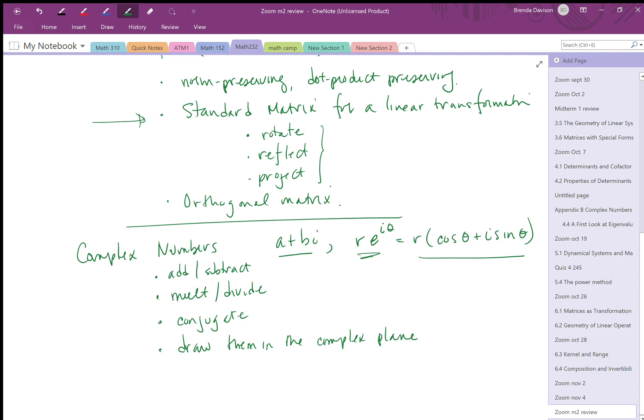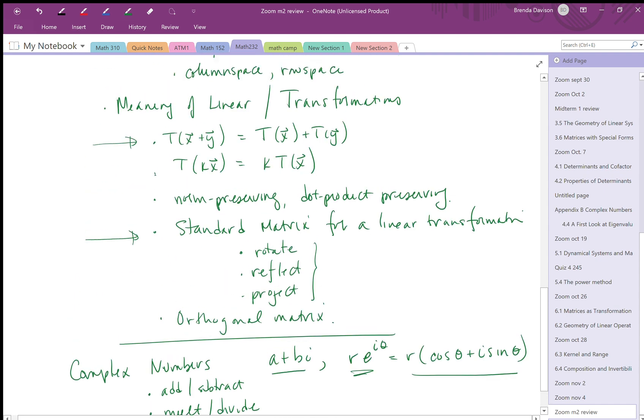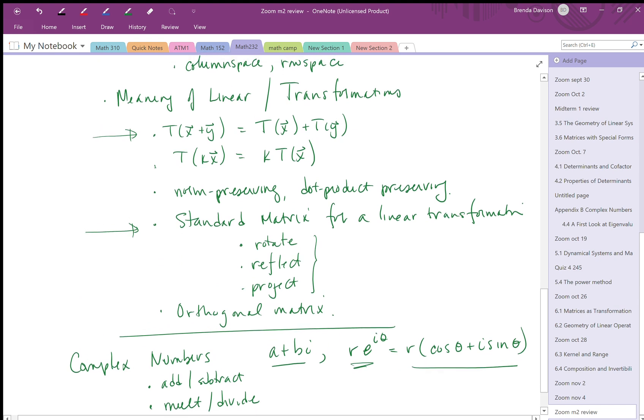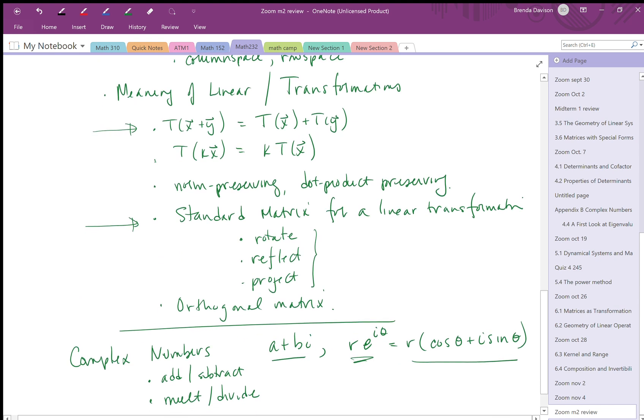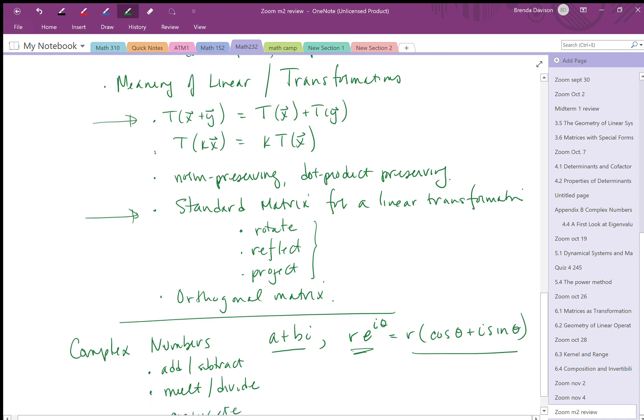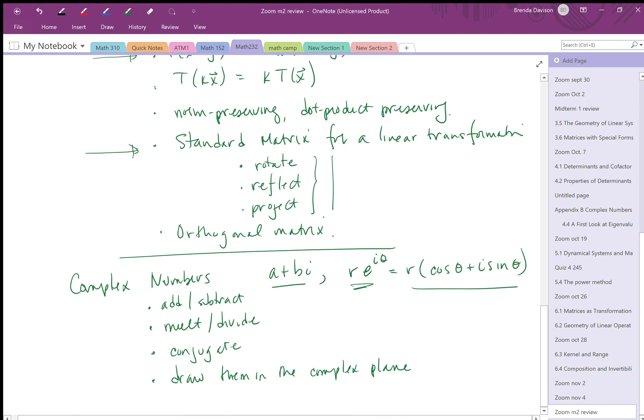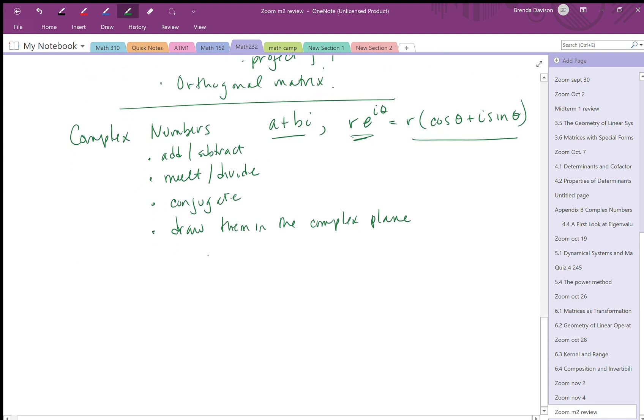We've got the meaning of linear, the linear transformations, the standard matrix, geometrically what is happening when we multiply by a matrix, the complex numbers, and finally, having sort of hit upon all of the major topics, we have captured a lot of these things and the relationships between them, which is important.